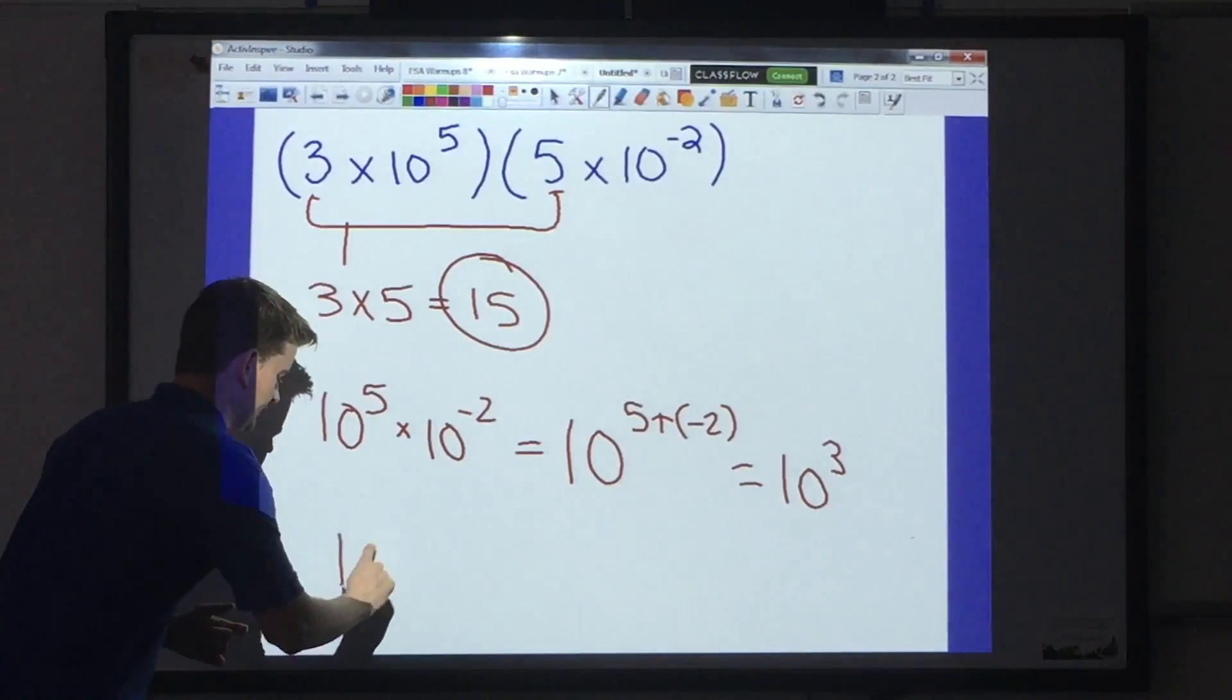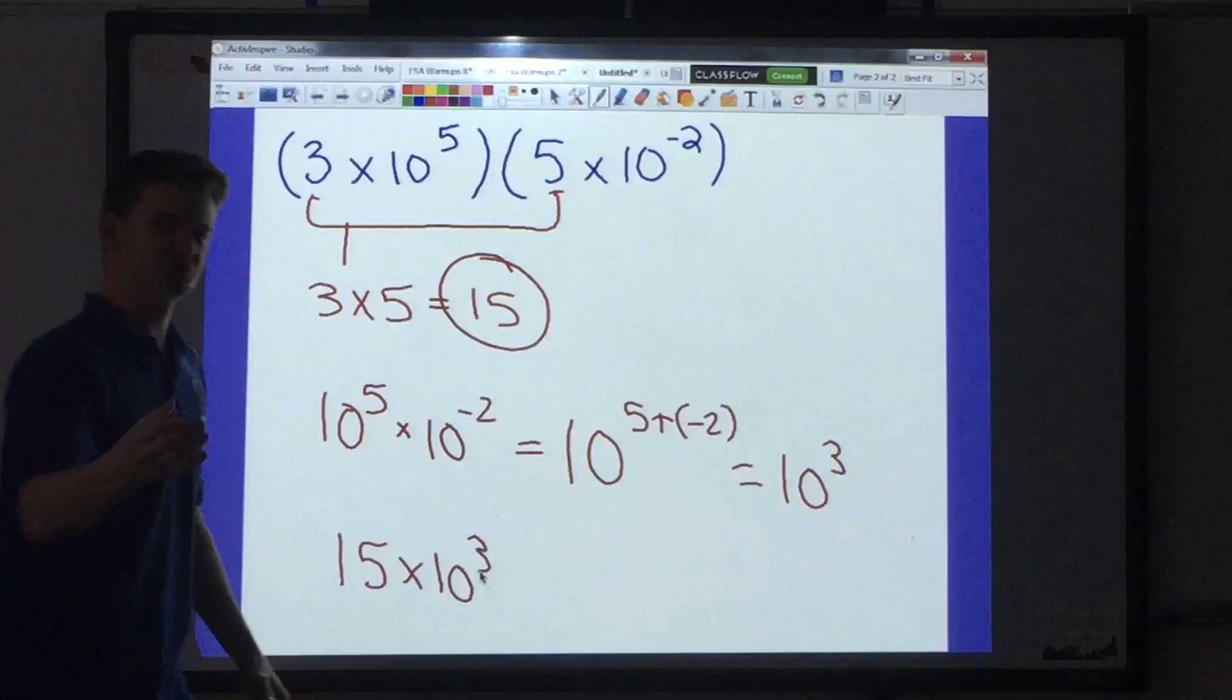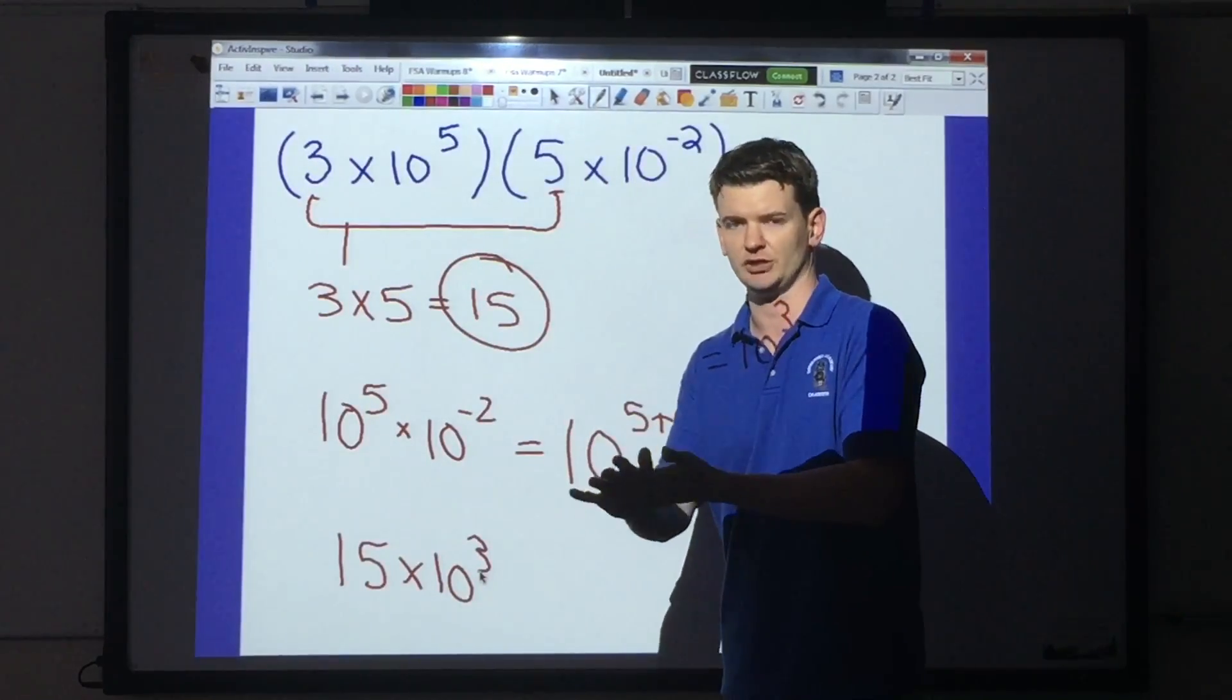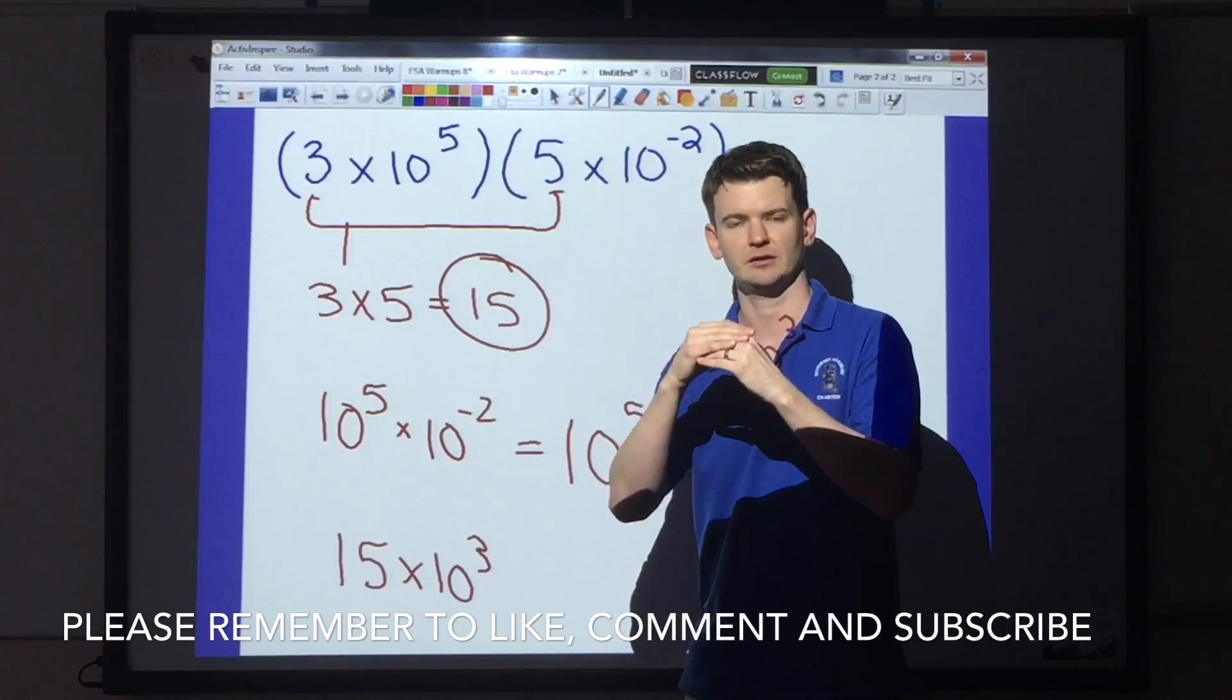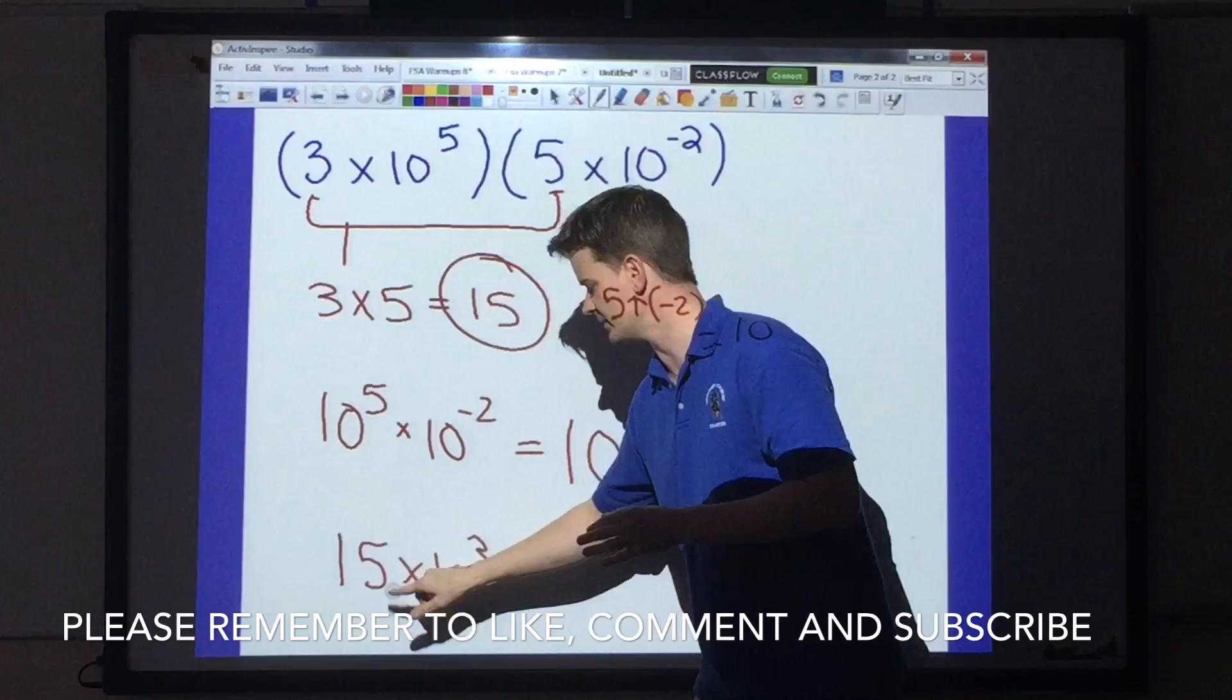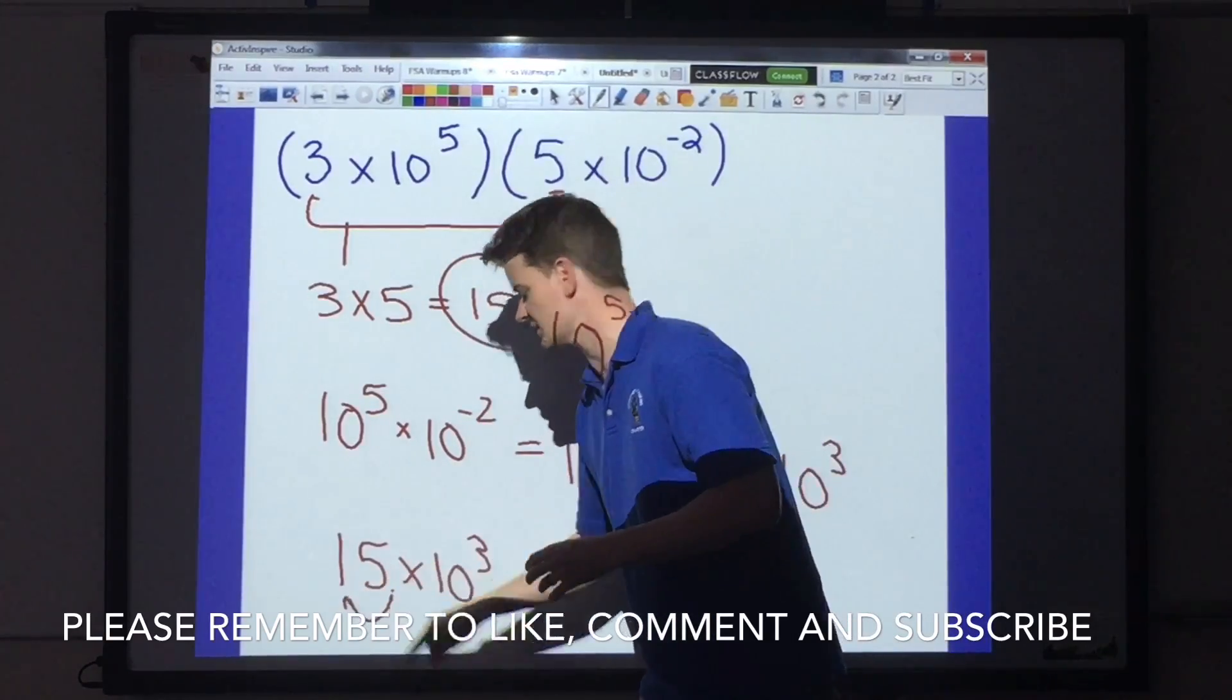So I'll start by writing my answer, 15 times 10 to the 3rd. But there's a small problem here. To be in correct scientific notation, your factor has to be greater than 1, but less than 10. So to do that, I'm going to have to drop a decimal here. I will move the decimal one spot to the left.